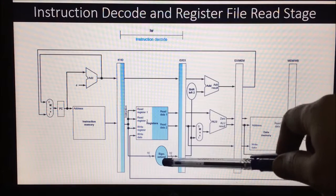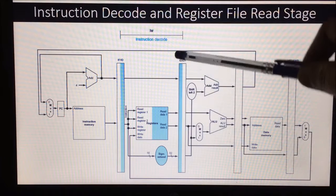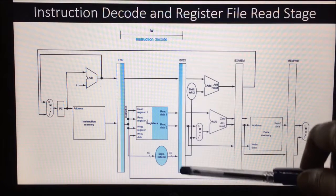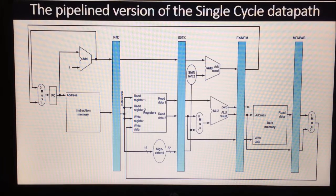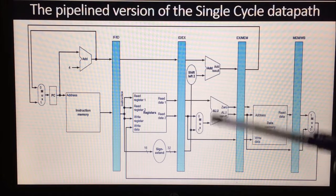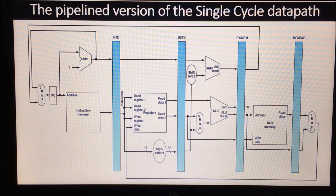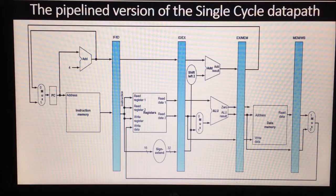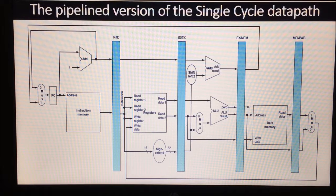EX/MEM is a register which acts as a buffer between the execution and memory access stage, and MEM/WB is the register which acts as a buffer between memory access and write back stages.